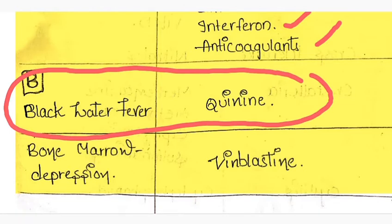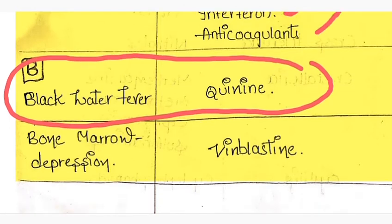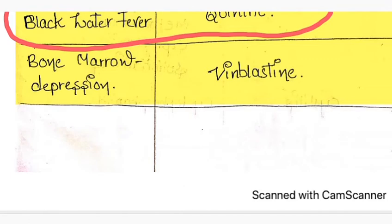Bone marrow depression is caused by vinblastine. As you know, anti-cancer drugs majorly cause bone marrow depression.